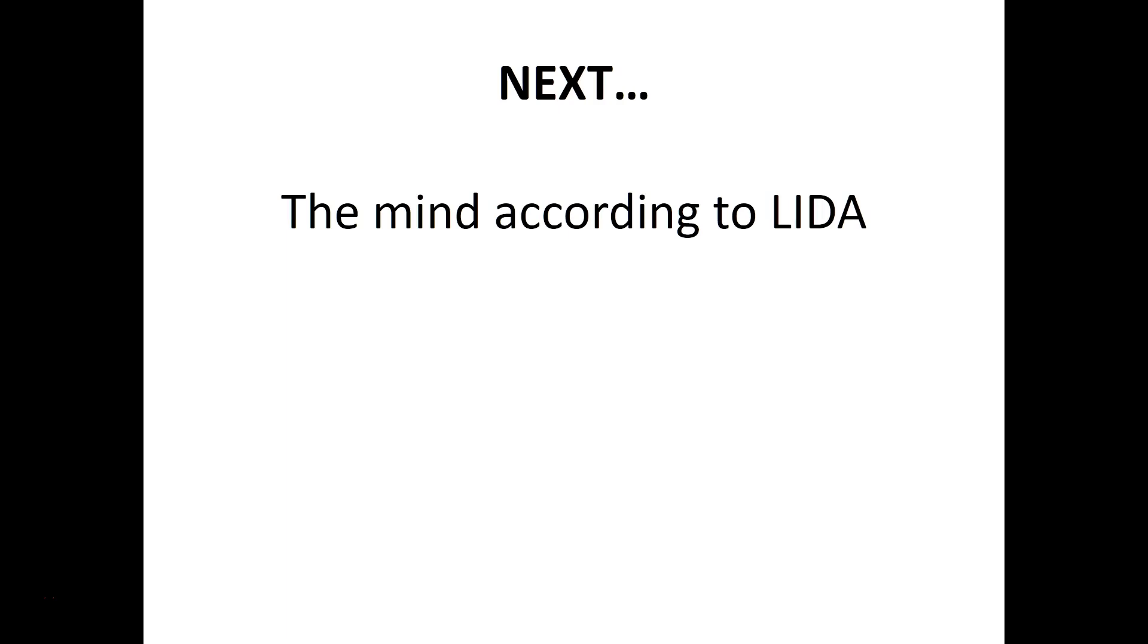In our next video, we'll talk about how the LIDA model approaches this question. We'll see that LIDA's definition of mind hinges on the idea of an autonomous agent, as defined in the 1997 paper of Stan Franklin and Art Graser entitled 'Is It an Agent or Just a Program, a Taxonomy for Autonomous Agents?' This paper can be found on the CCRG website.